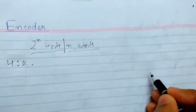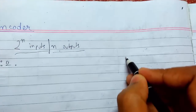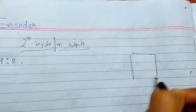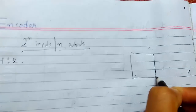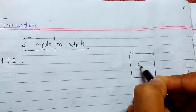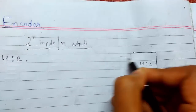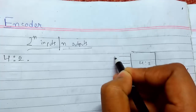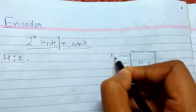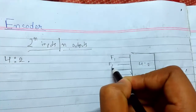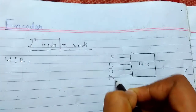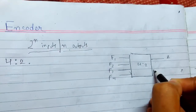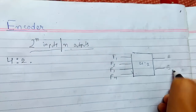First I will make a block diagram. So this is a 4-to-2 encoder — we have 4 inputs: f1, f2, f3, f4, and a and b are our outputs.